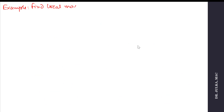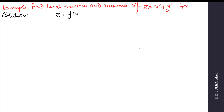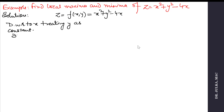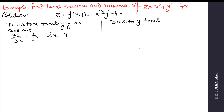Find local maxima and minima of the function z = x² + y² - 4x. First, we differentiate with respect to x treating y as a constant, and we get: del z / del x = 2x - 4. Again differentiate with respect to y treating x as a constant, and we get: del z / del y = 2y.